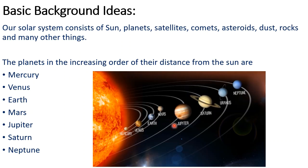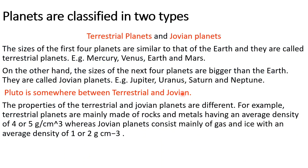In this picture you can see how the different planets are situated at different distances from the Sun. The planets in our solar system are classified into two types: terrestrial planets and Jovian planets. The sizes of the first four planets — Mercury, Venus, Earth, and Mars — are similar to that of our Earth, so they are called terrestrial planets. The sizes of the next four planets — Jupiter, Saturn, Uranus, and Neptune — are bigger than our Earth, so they are called Jovian planets. Pluto is somewhere between terrestrial and Jovian.